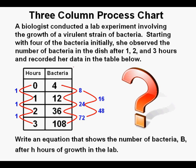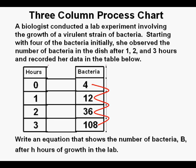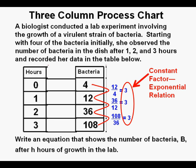Since it's not linear and not quadratic, what kind of relation is it? We expand our table to a three-column chart. As we go from one output value to the next, let's try dividing the bottom by the top: 12 over 4, then 36 over 12, and 108 over 36. The value of each of these quotients is 3. This analysis shows that each output value is consistently multiplied by a constant factor — increased by the same proportion — which signifies an exponential relation. The rate of change is not the same, but the percentage change is.